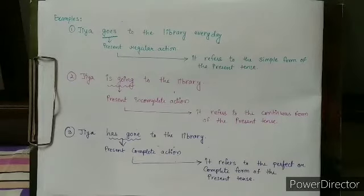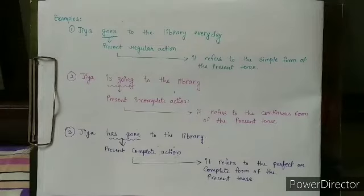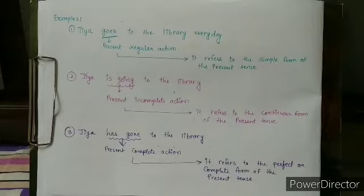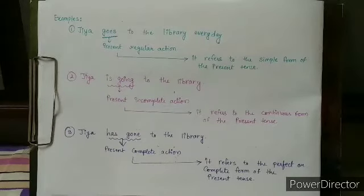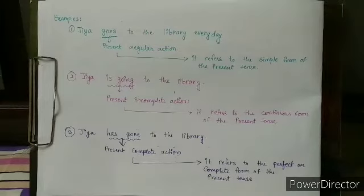To recap: Jia goes to the library every day — present regular action, simple form of present tense. Jia is going to the library — present incomplete action, continuous form of present tense. Jia has gone to the library — present complete action, perfect or complete form of the present tense.